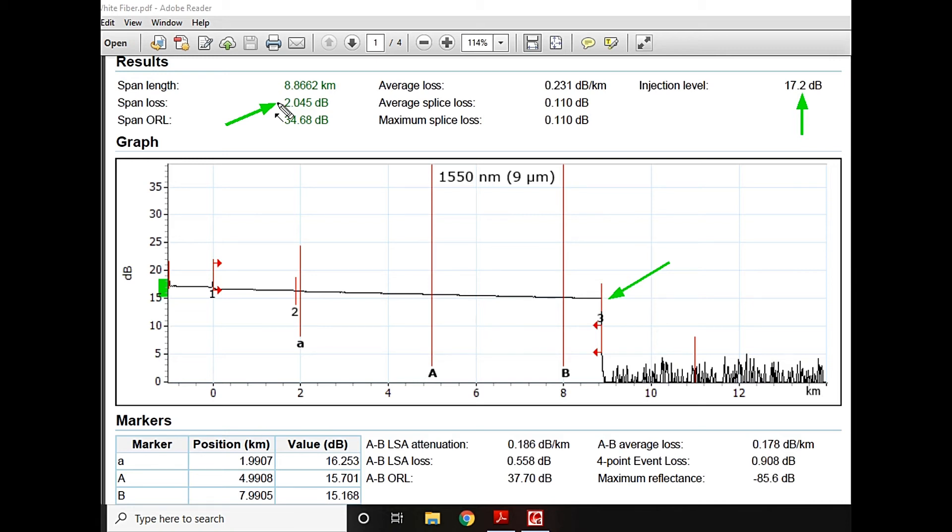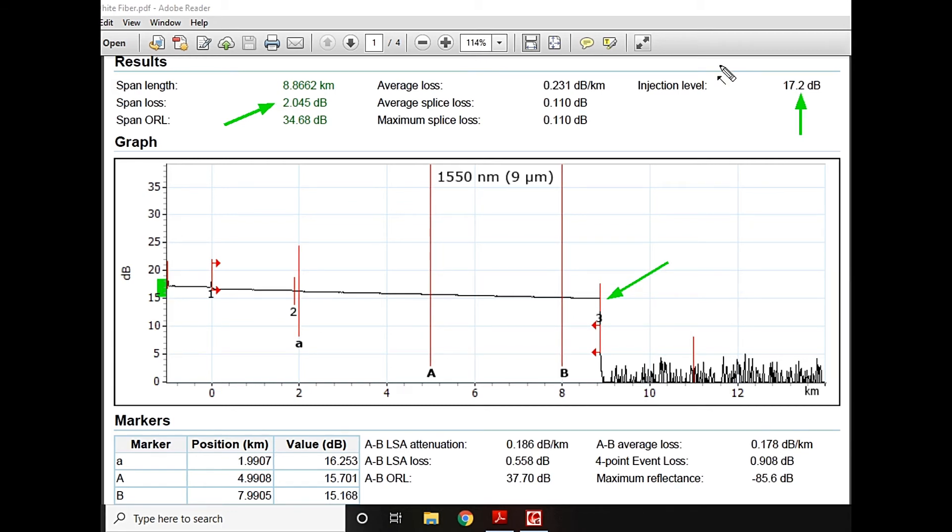About 2.045 dB power has been lost. So whenever you are going to establish a link, you have to keep in your mind that around 2 dB is going to be lost over this link because of the dB per kilometer loss and connector losses, the splice loss, etc.